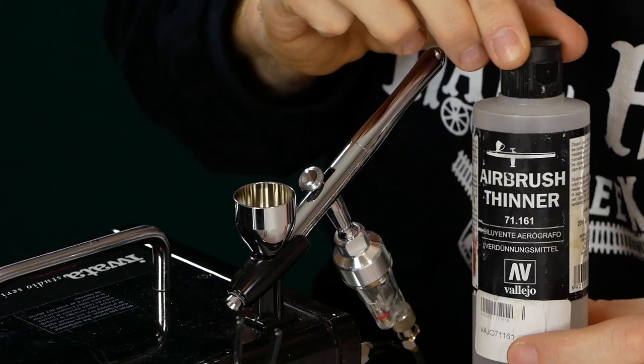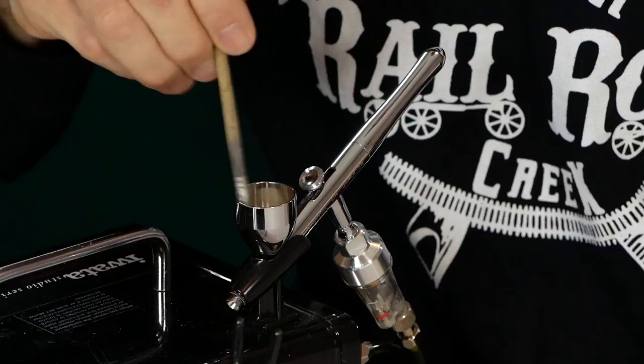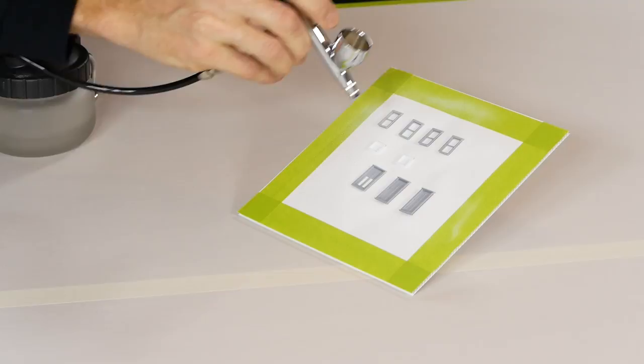We also find even when using Vallejo air paints that have been thinned for airbrushing they still need a little more thinning. Do some testing on some paper to find out a paint to thinner ratio that will work for you. I have my compressor set to 20 psi and I generally apply multiple thin coats until each piece is covered.